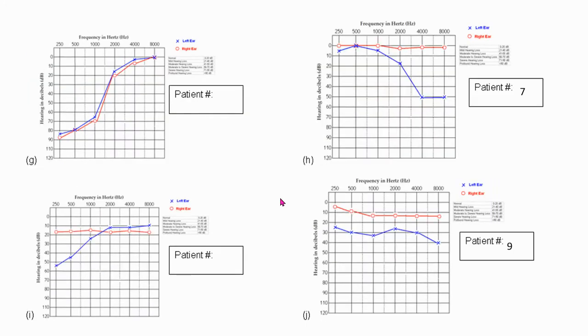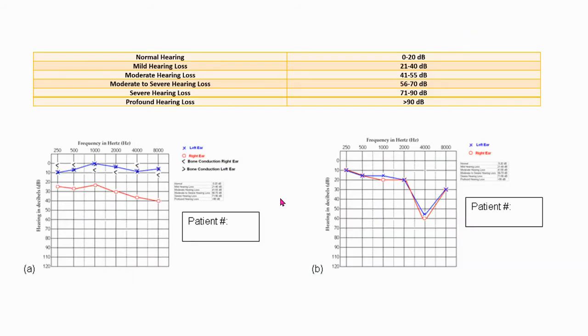So for instance, patient one is not necessarily going to be audiogram A. Here you need to read your patient description and determine which of the 10 audiograms belongs with your patient.